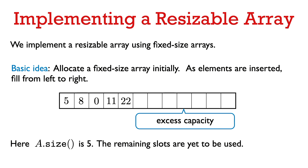Now let's see how we can design a data structure that implements the resizable array abstract data type. We are going to implement resizable arrays using fixed size arrays. We start out with a fixed size array. The size of the array is the capacity. It's important to distinguish the capacity from the actual number of elements we are storing — we call that the size.